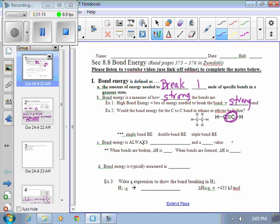Here is sort of a little take home message: single bond bond energy tends to be weaker than double bond bond energy, which tends to be less than triple bond energy. It takes more energy to break a triple bond.